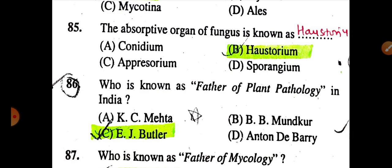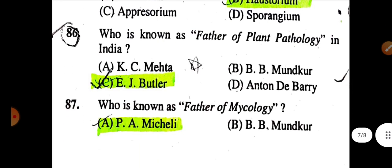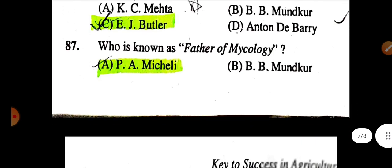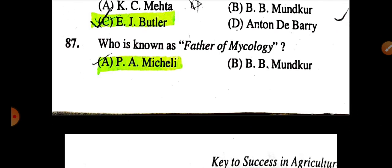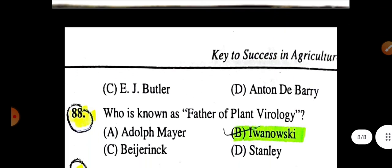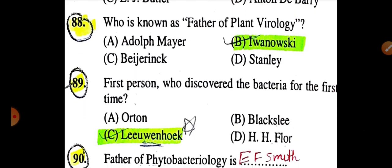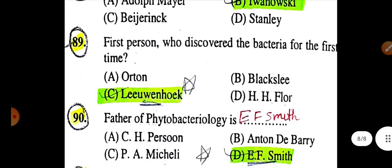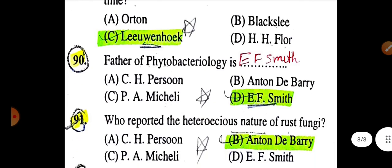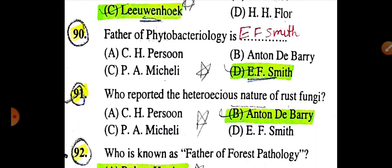The absorptive organ of fungus is haustorium. Who is known as the father of plant pathology in India? Answer: E.J. Butler. Who is known as the father of mycology? Answer: P.A. Micheli. Who is known as the father of plant virology? Answer: Ivanovski. The first person to discover bacteria was Leeuwenhoek. The father of phytobacteriology is E.F. Smith.